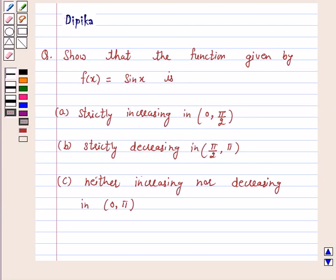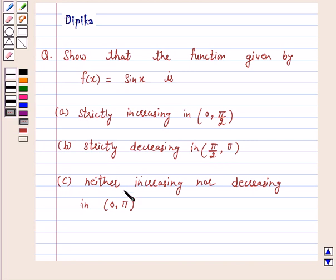Hi and welcome to the session. I am Deepika. Let's discuss the question: Show that the function f(x) = sin x is (a) strictly increasing in the open interval (0, π/2), (b) strictly decreasing in the open interval (π/2, π), and (c) neither increasing nor decreasing in the open interval (0, π).